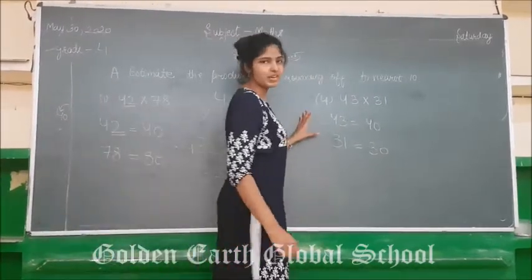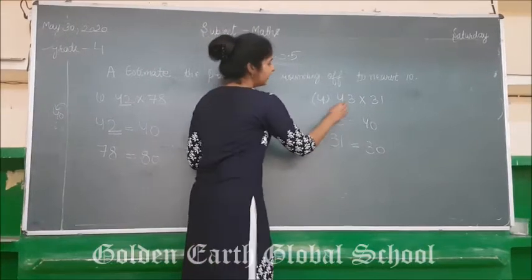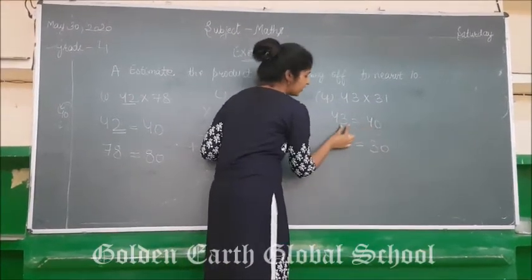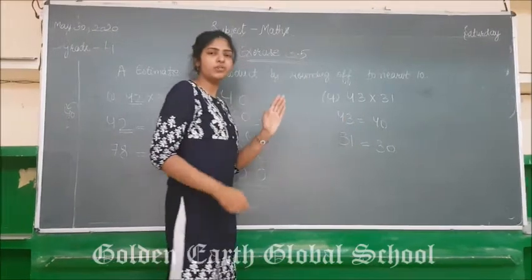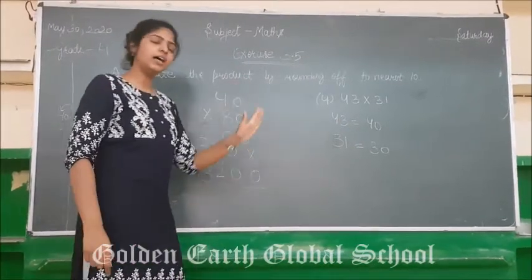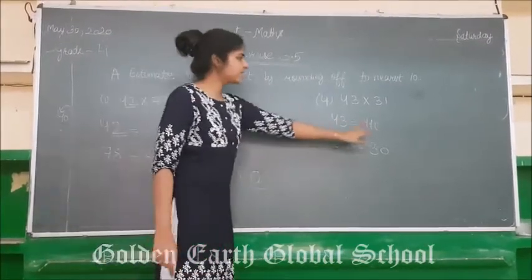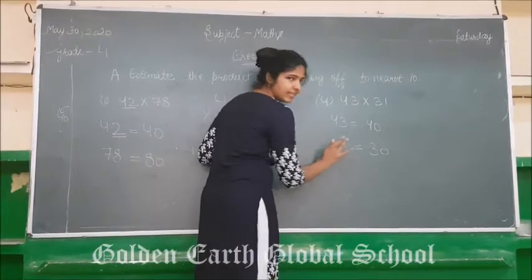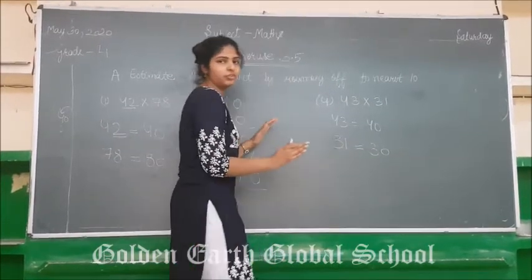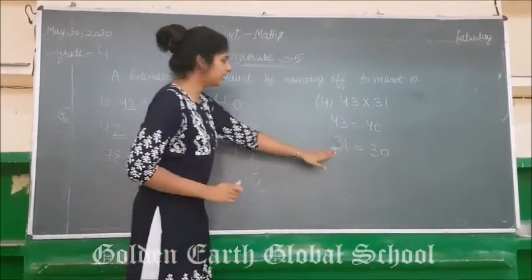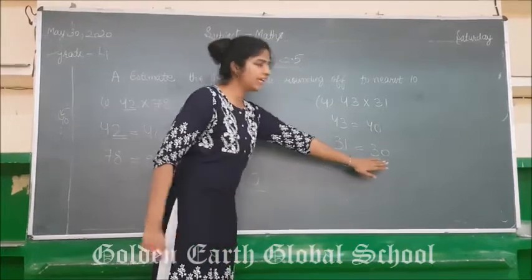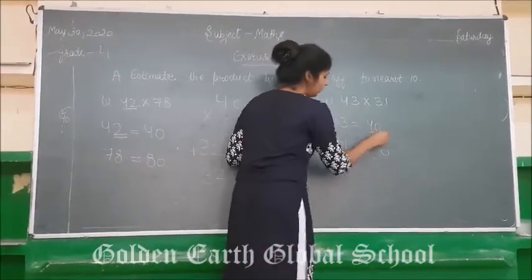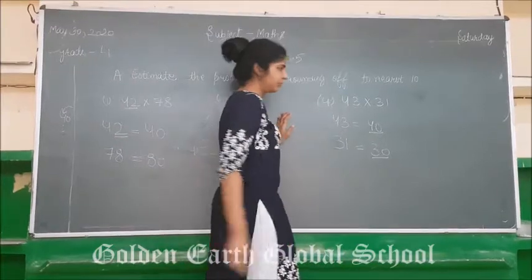In the fourth question, the same method applies. 43 rounded to the nearest 10 is 40, because 3 is less than 5 so we shift to the backward 10. Similarly, 31 — 1 is less than 5, so we shift to the backward 10. The nearest 10 of 31 is 30. Now we have to multiply these two numbers.